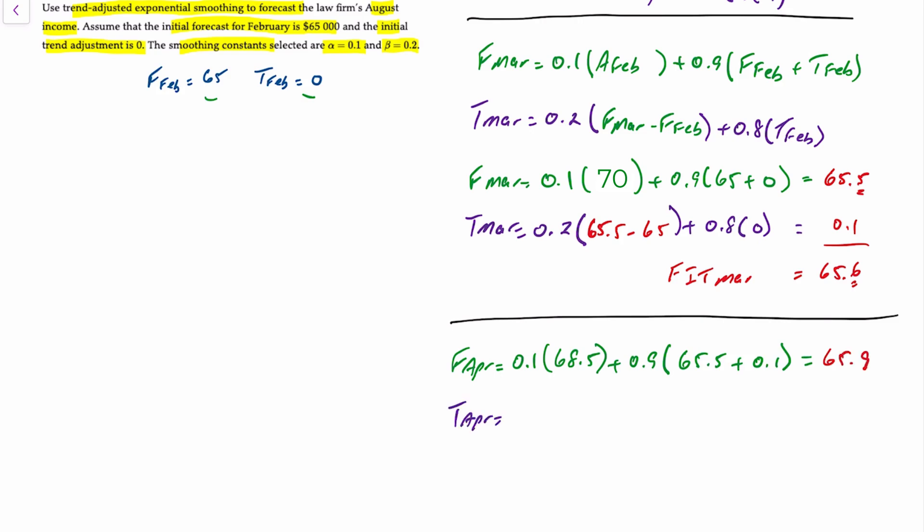The trend for April is 0.2 times the difference between April's forecast of 65.9 minus March's forecast of 65.6, plus 0.8 times March's trend of 0.1. So this equals about 0.16 roughly. And therefore, the trend-adjusted forecast for April is the sum of those two together, 66.06 due to rounding.